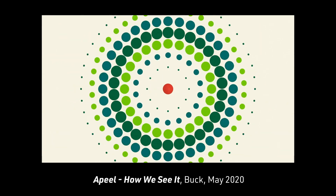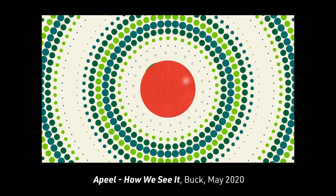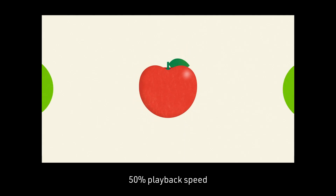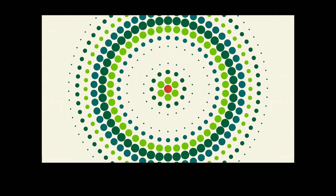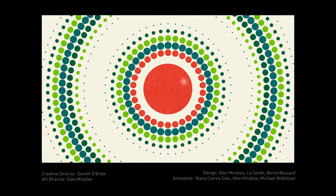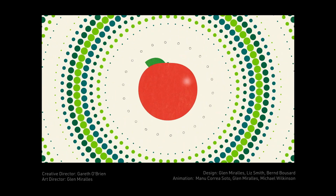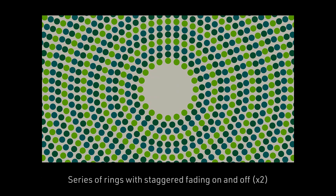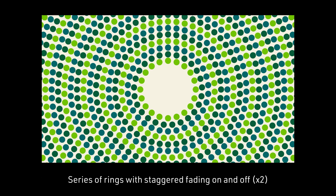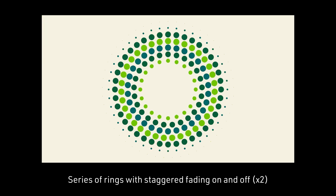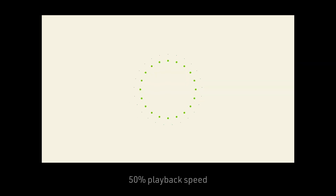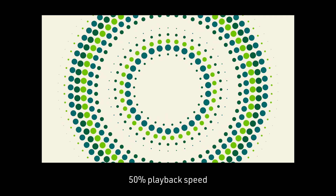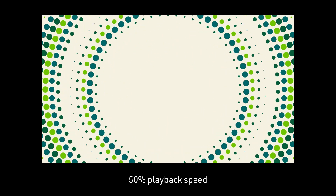Here's the reference scene for the animation in real-time and 50% playback speed. Even at 50% speed, things are still difficult to catch, but after looking at it frame by frame, I realized that this setup is just a series of rings with a staggered animation of the circle size scaling up and down. And that's all for the analysis.